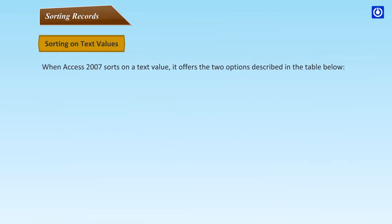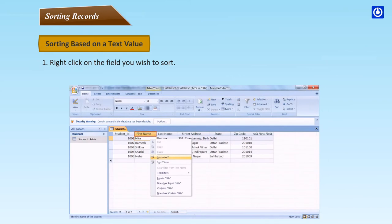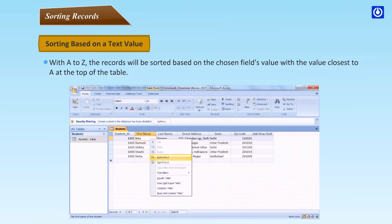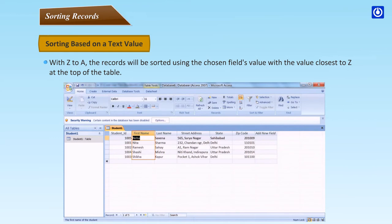Sorting on Text Values: When Access 2007 sorts on a text value, it offers two options. A to Z (Ascending): values closest to A are displayed first. Z to A (Descending): values closest to Z are displayed first. To sort based on a text value, right-click on the field you wish to sort and select either the Sort A to Z or Z to A option. Records will be sorted accordingly, with the appropriate value at the top of the table.